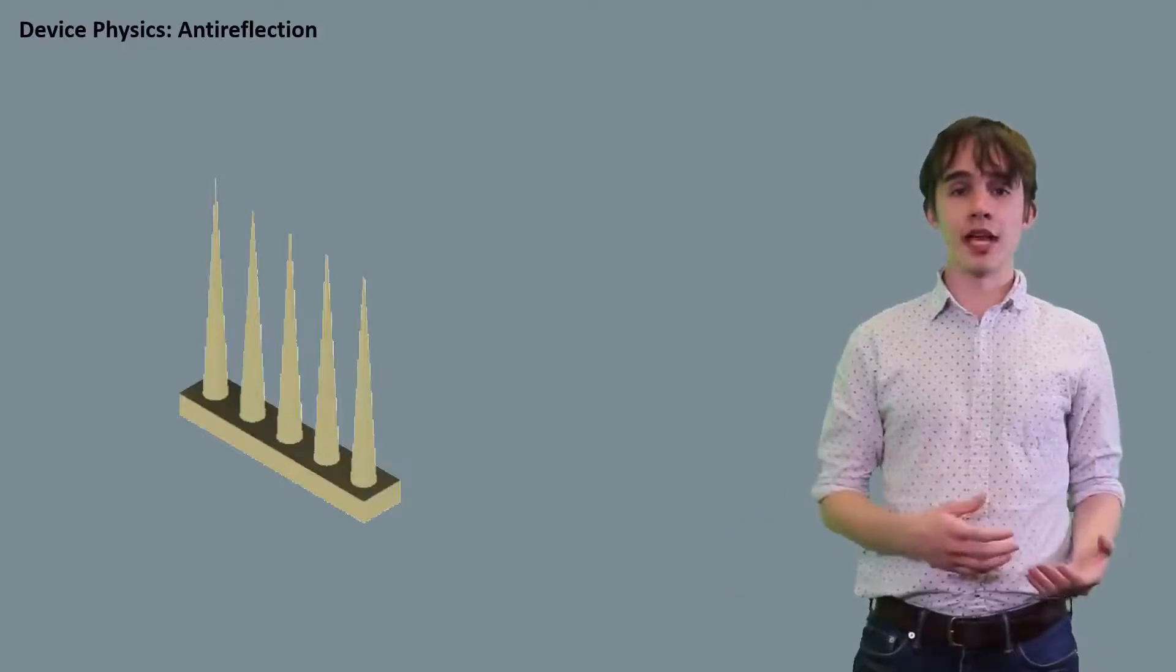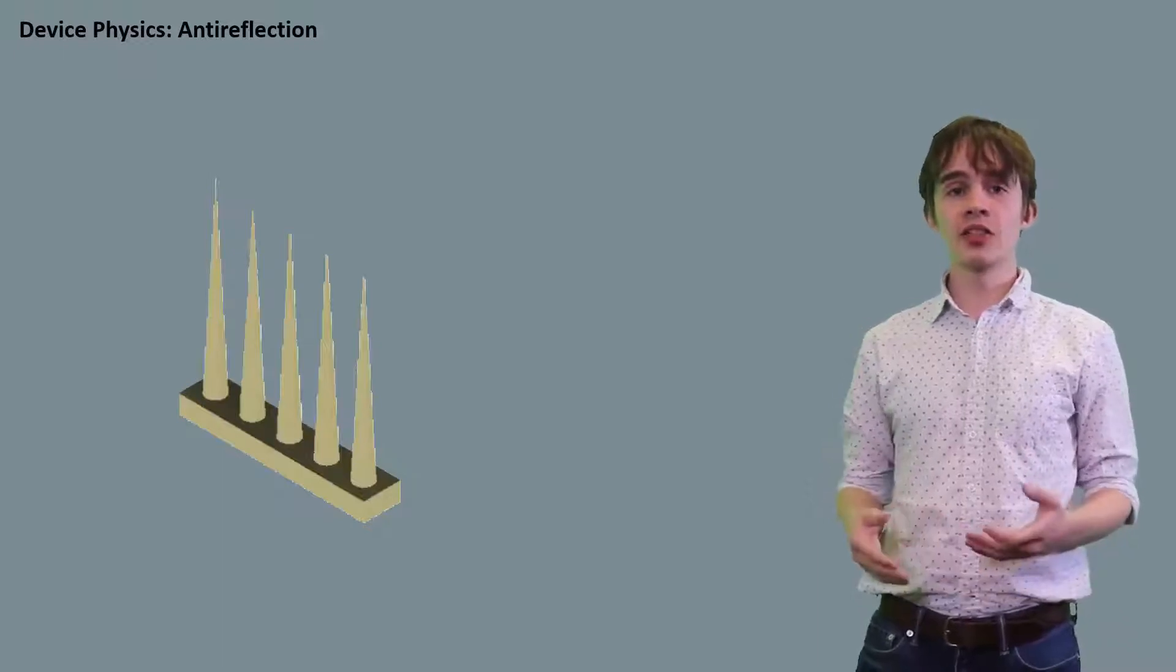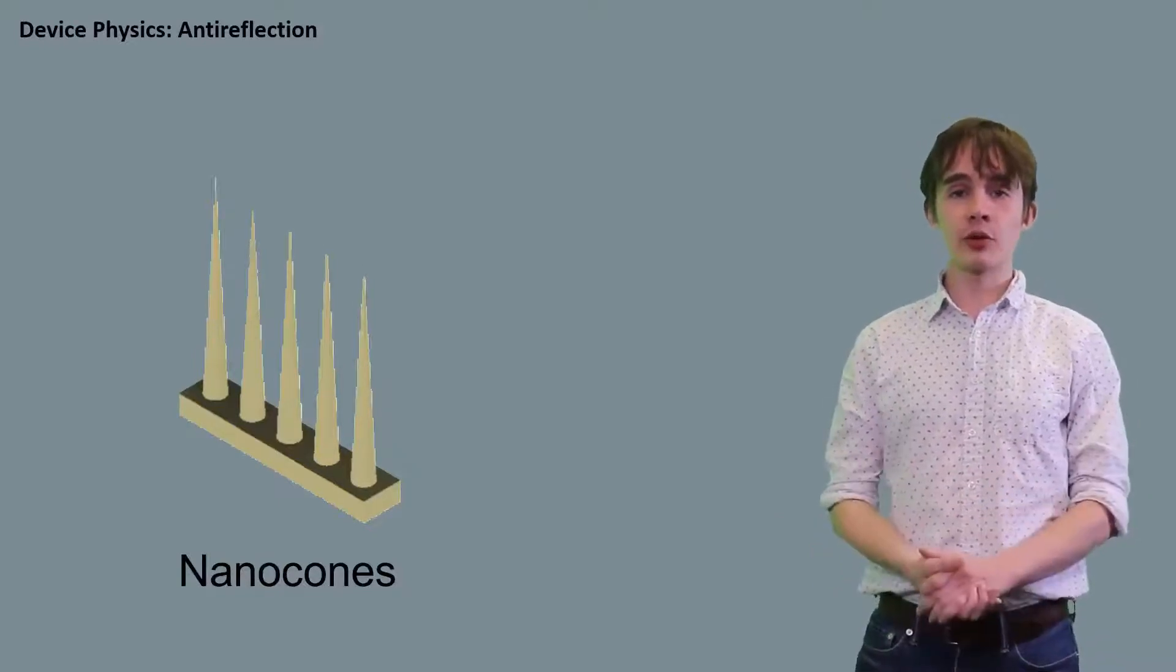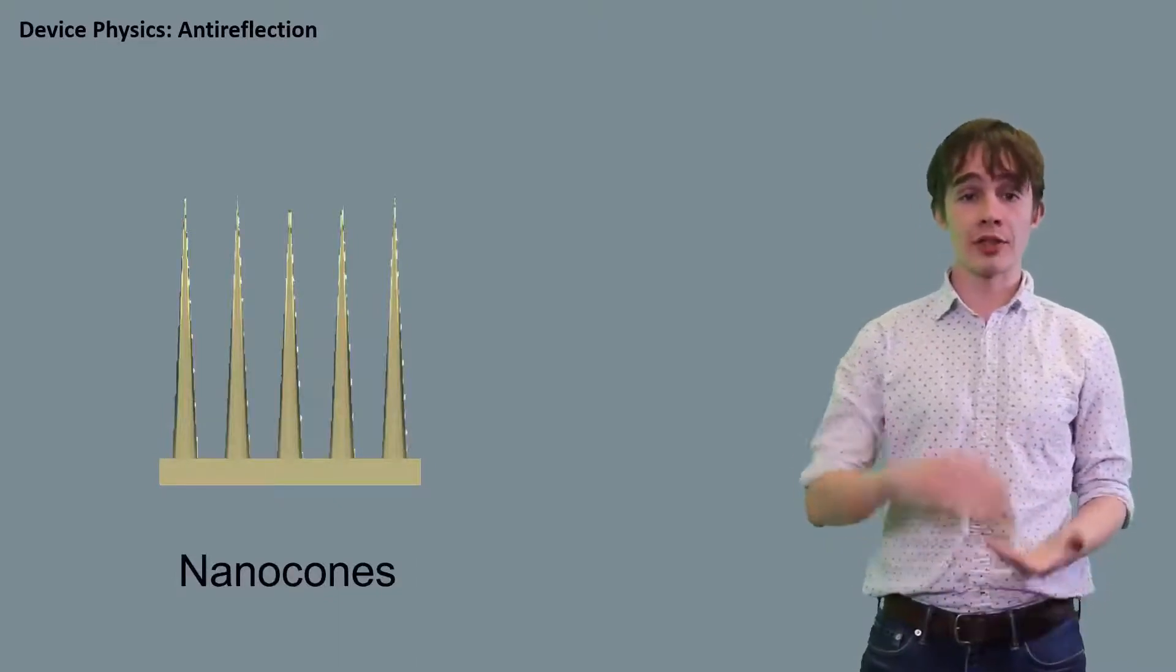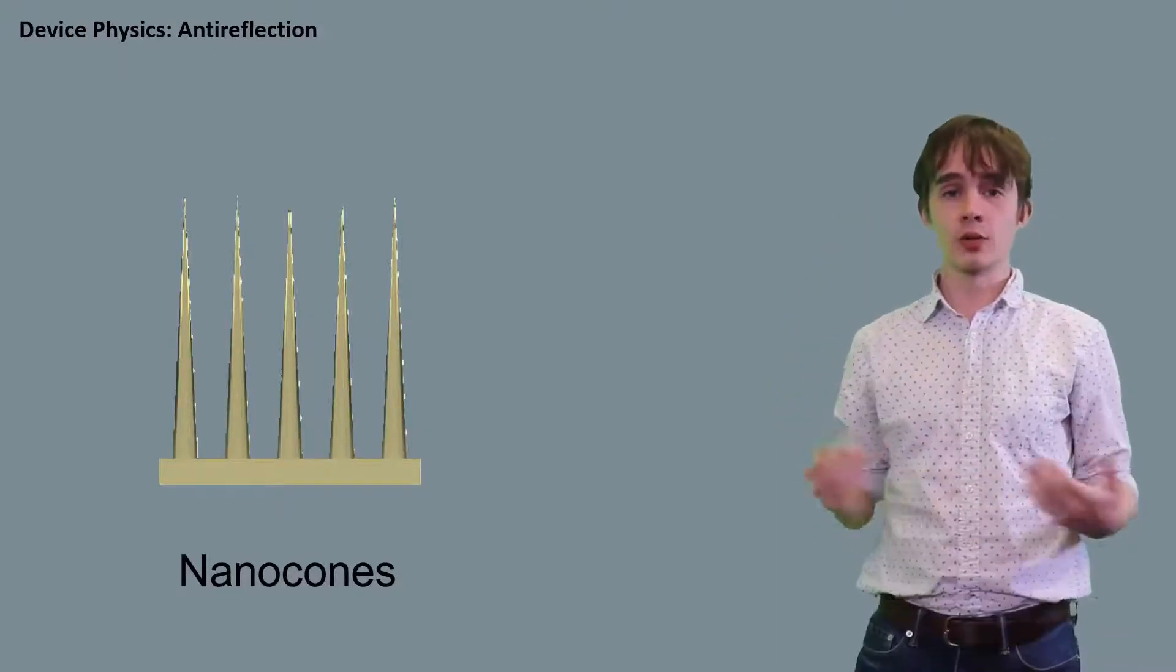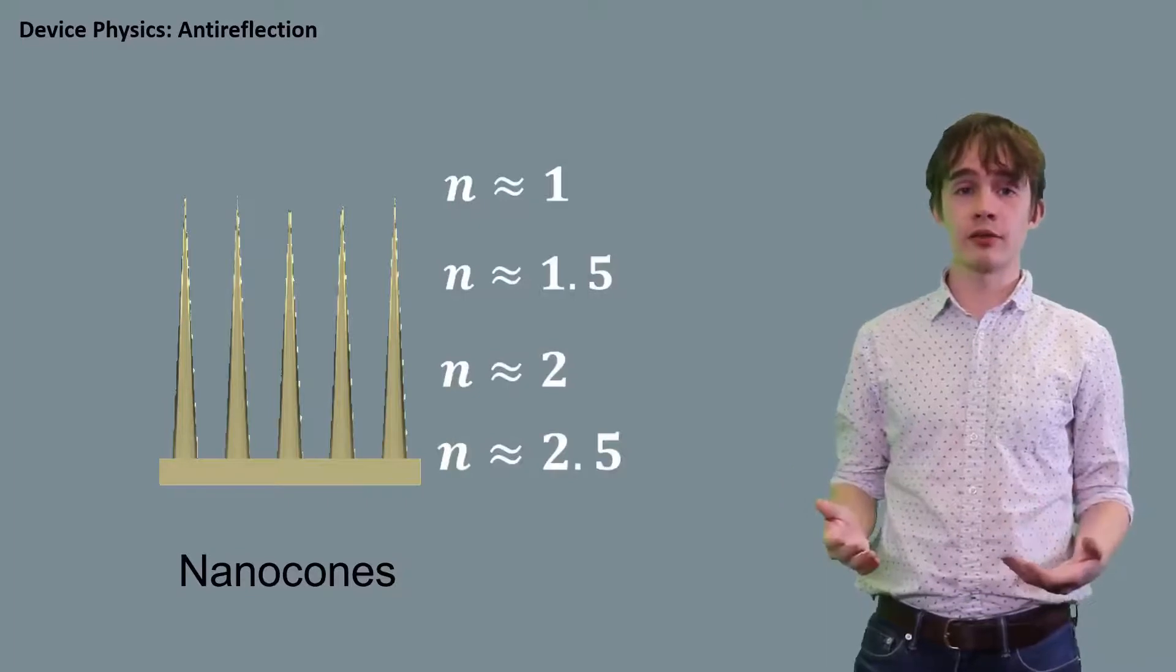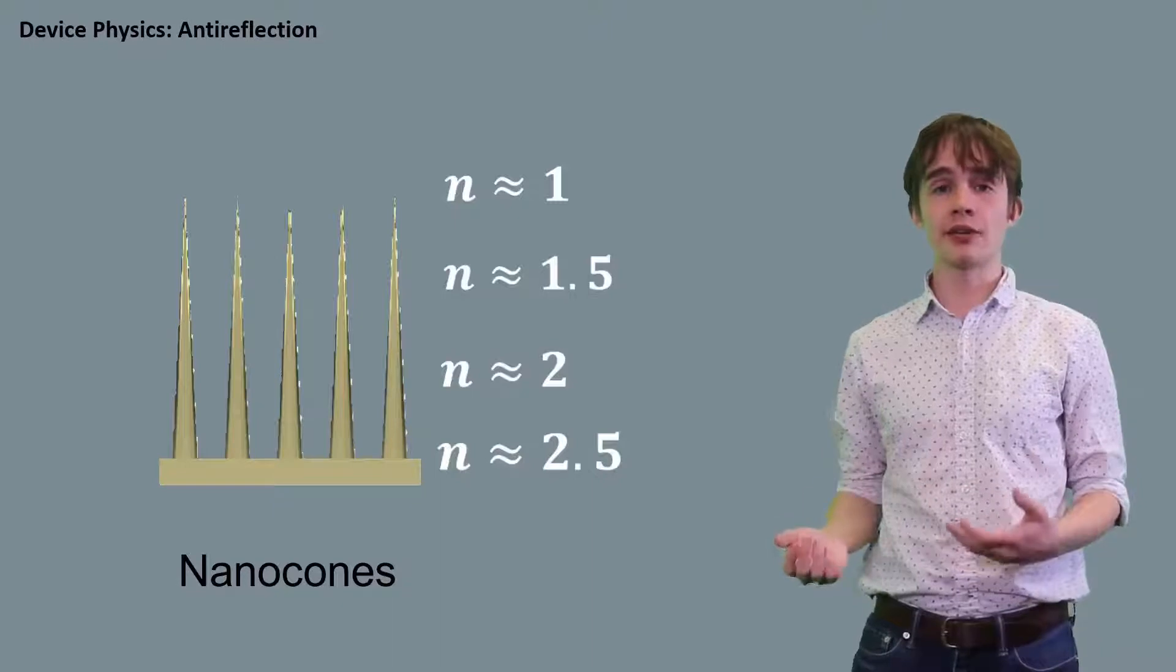Consider the case of these tapered nanowires that are very thick near the substrate, but very thin at the ends. These are also sometimes referred to as nanocones. These can actually be used to achieve a continuous gradient in refractive index. Consider how the refractive index changes as we move from the air down towards the substrate. At the top, very little of the cross-sectional area is occupied by the nanowires, so the refractive index is close to that of air. As we move down, the area occupied by the wires goes up, so the effective refractive index increases. This allows for a smooth transition for light entering the material.